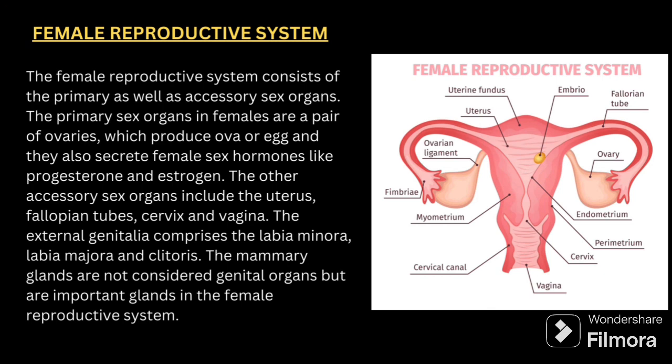The other accessory organs include the uterus, fallopian tube, cervix, and vagina. The external genitalia comprises the labia minora, labia majora, and clitoris.